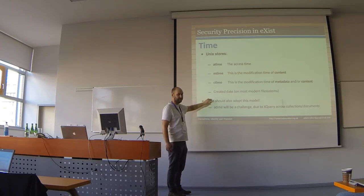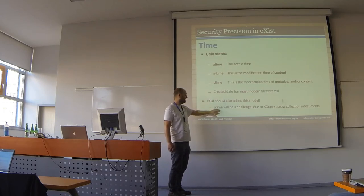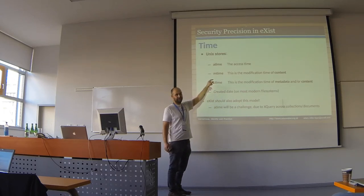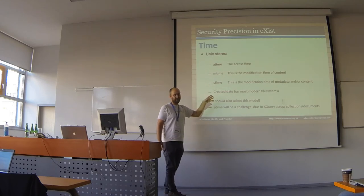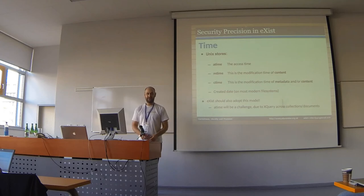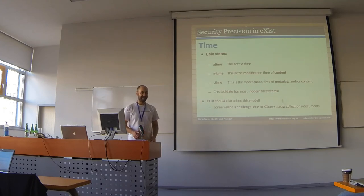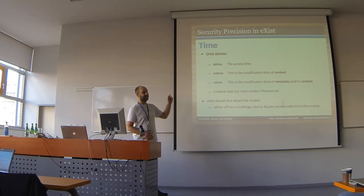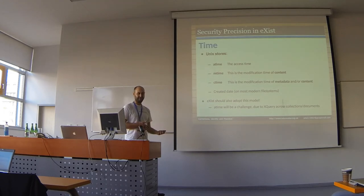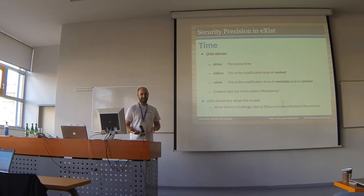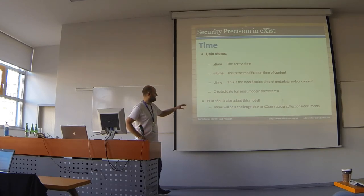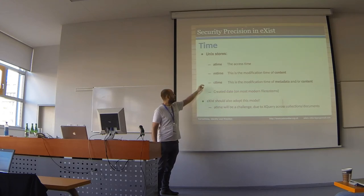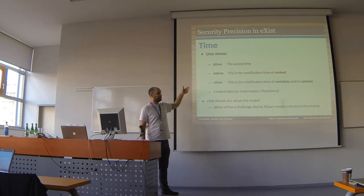One thing that concerns me about adopting this model is access time — atime is updated every time you read a resource. If I run an XQuery touching a million documents, I have to update the access time on a million documents. What's that going to do to query performance? Can I do that synchronously? What does that mean for accuracy of the time? So there's a lot to think about with access time. But mtime and ctime are relatively easy because those are only done on writes. I just need to think about this a little bit more — this is what I'd like to bring in.